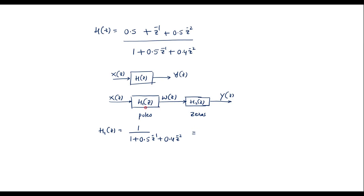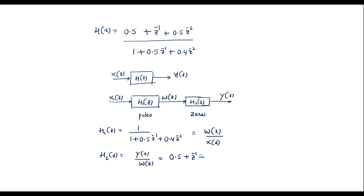H1(Z) as a transfer function is output over input: W(Z) divided by X(Z). H2(Z) is output over input: Y(Z) divided by W(Z), which equals the zeros part — that is the numerator: 0.5 plus Z inverse plus 0.5 Z power minus 2. Now let me simplify this further.